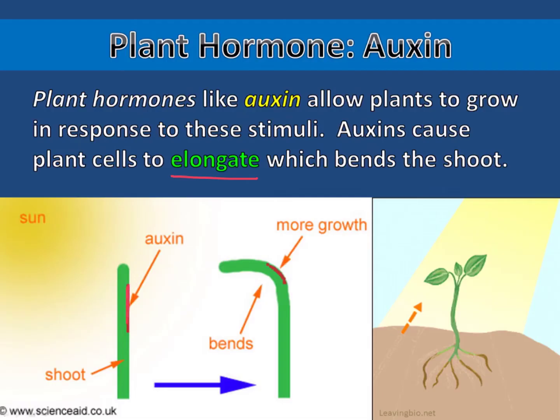Here you can see that the cells on the side of the plant that are getting less sunlight are producing more auxin. That causes those cells to grow and elongate, which bends the plant towards the sunlight.